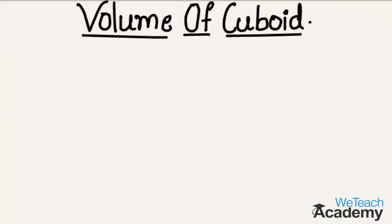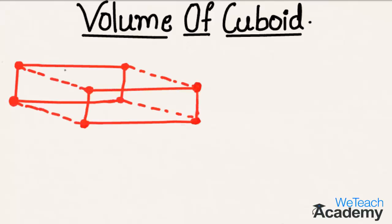Now let me explain again using a rough diagram. Here there is a simple closed figure in which all the surfaces are in the form of rectangles. Such a surface is called a cuboid, and a cuboid consists of length, breadth and height.